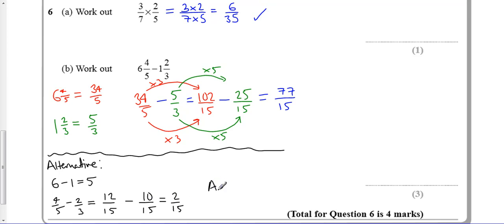So that means my answer is just both these answers combined together which gives me 5 and 2 fifteenths which at first looks like these two answers aren't the same.